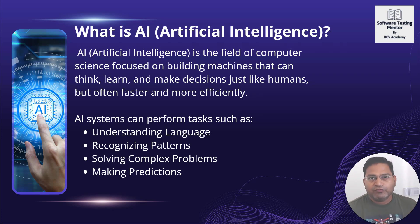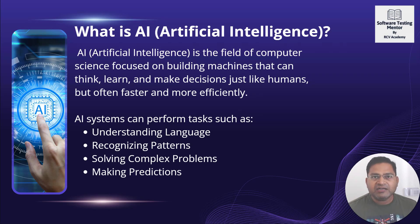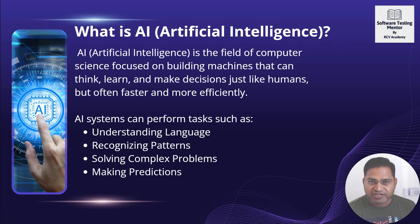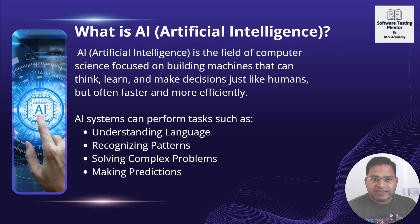For example, from childhood we learn to identify fruits — we're told this is a banana, this is an apple, this is an orange. So as a human being, we can look at an apple and our intelligence processes that information to recognize it. Artificial intelligence introduces similar intelligence into machines, making them learn the way humans learn — by looking, analyzing, and then making decisions based on past learning.